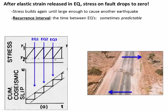If there's a consistent stress threshold required to trigger an earthquake, and the plates are moving at the same speed over time and the fault isn't changing, it may be the case that the stress level is reached after a given amount of time each time. If that's the case, then we expect earthquakes to have a constant recurrence interval — the time between earthquake events. If stress builds at a constant rate and there's a constant stress threshold, the earthquakes will recur after a fixed time interval.